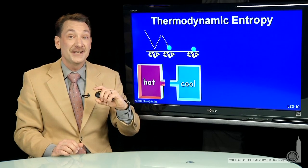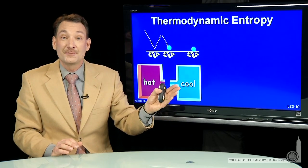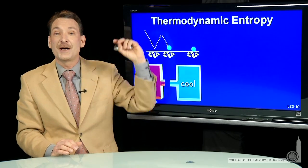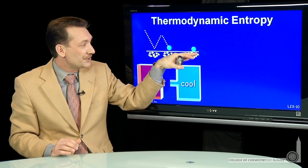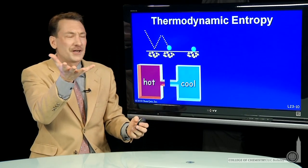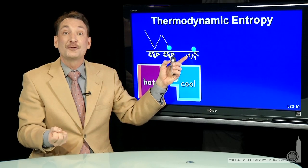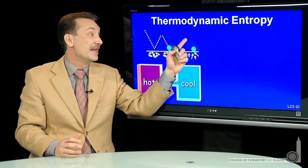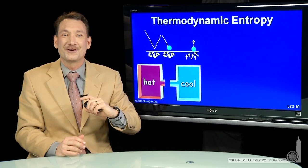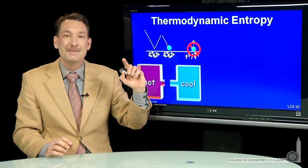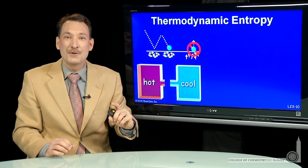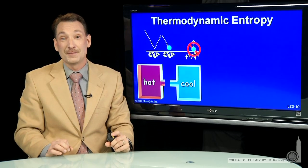If you think about a ball sitting on the floor, we never observe the opposite, the ball just spontaneously bouncing. Because that would mean all the particles in the floor move in a concerted motion, suddenly go to a lower entropy state, and impact the ball and raise it off the surface. Balls don't spontaneously bounce because that concerted motion is a low entropy situation.